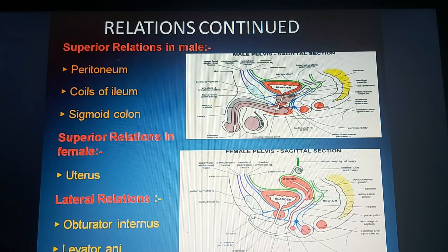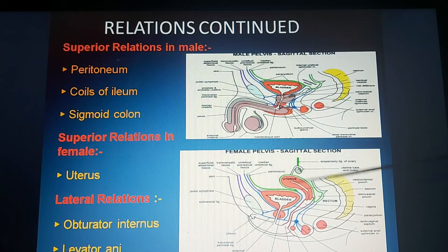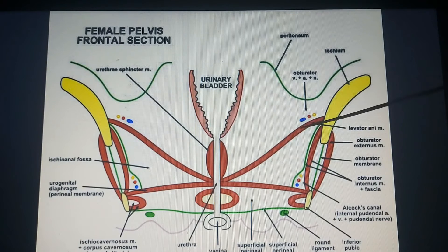The superior relations in males are: peritoneum, coils of ileum, and part of the sigmoid colon. In females, the superior relation is the uterus. The lateral relations in both male and female are the obturator internus and levator ani muscles.